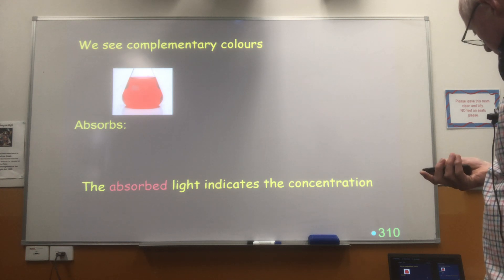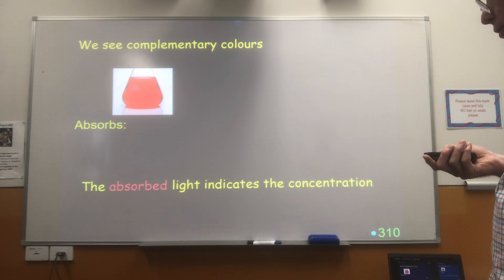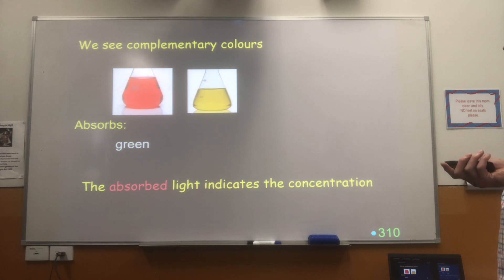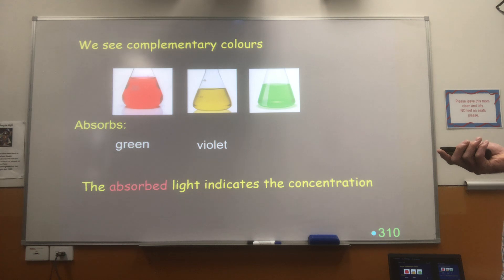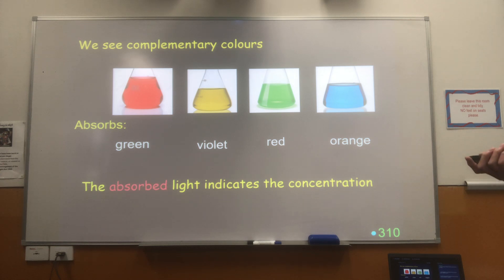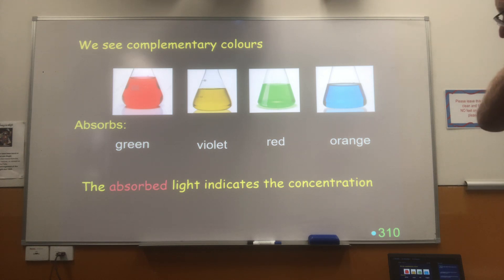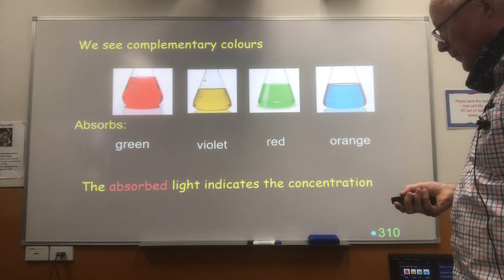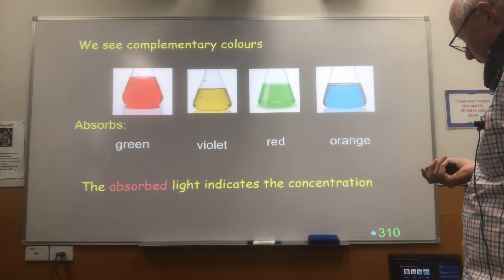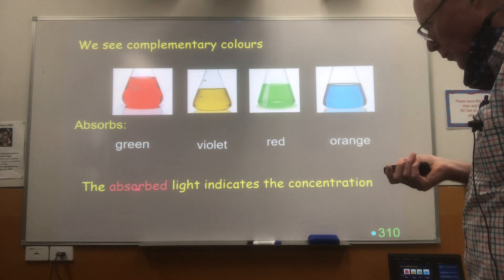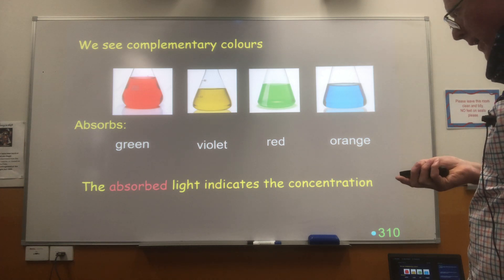You look at complementary colours — we see the complementary colours. If the solution absorbs green, we see it as red. If the solution absorbs violet, we see it as yellow. If the solution absorbs red, we see it as green. So we're not interested in the transmitted light — the colour we actually see — because that's not being absorbed by the solution. It's the absorbed light that's going to be dependent on the concentration. The higher the concentration, the more light will be absorbed.